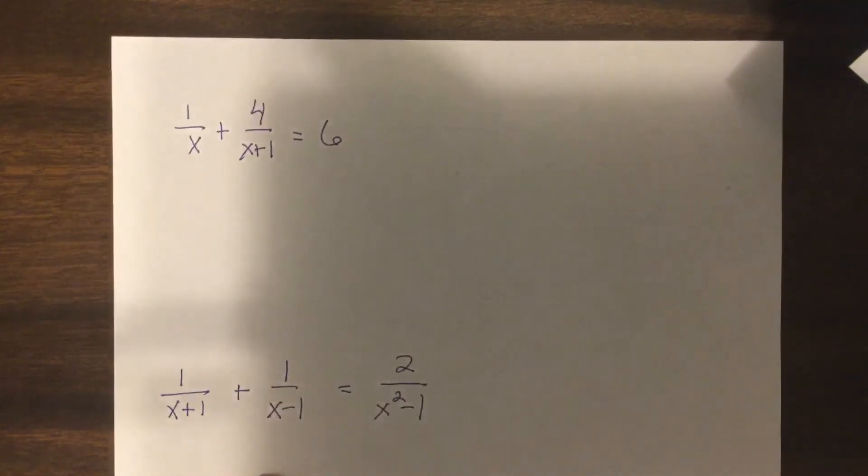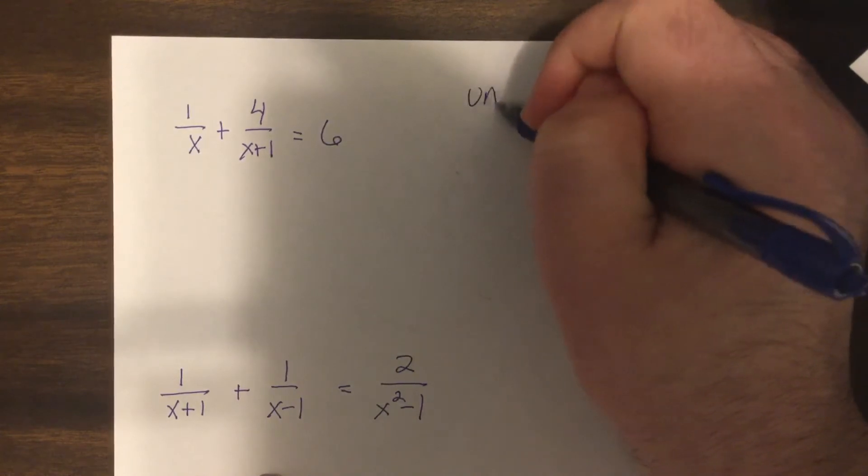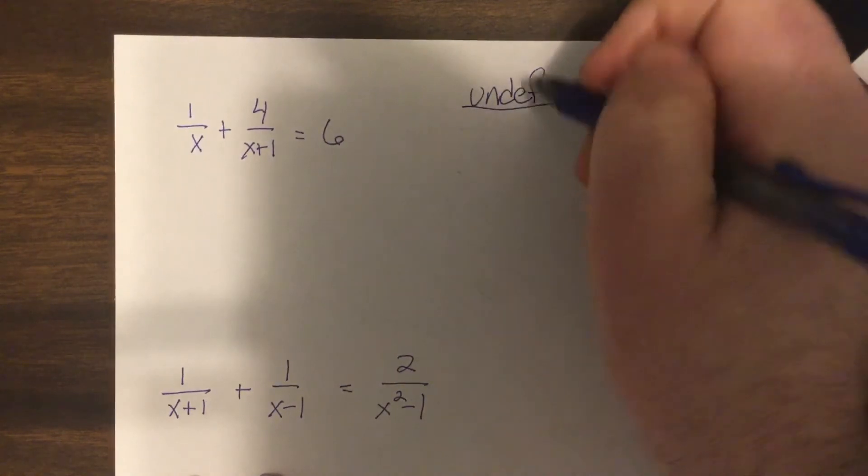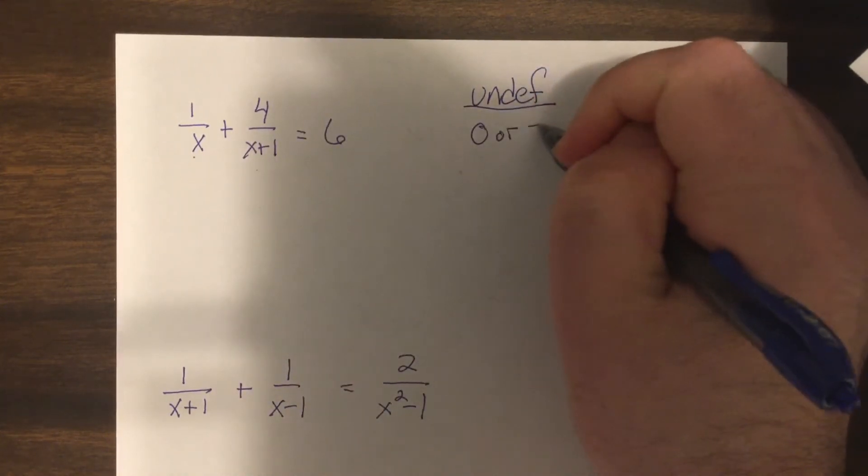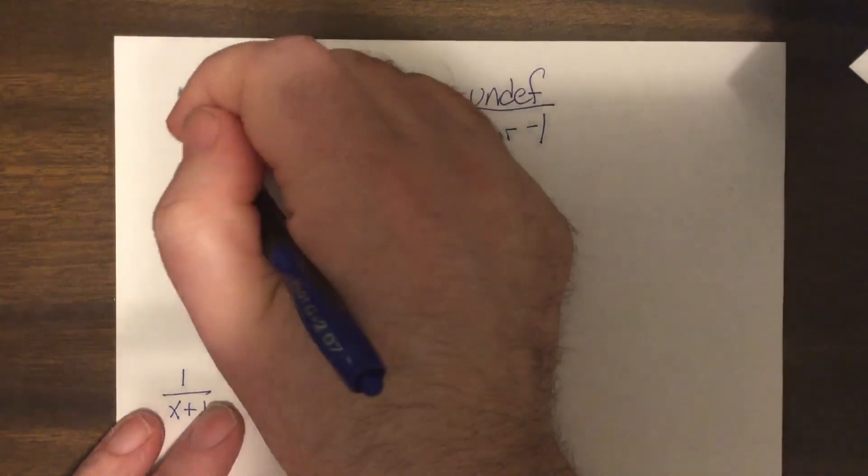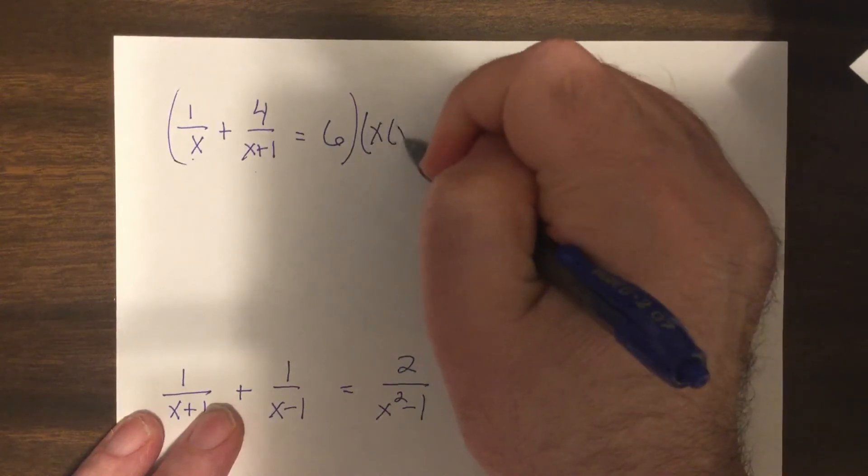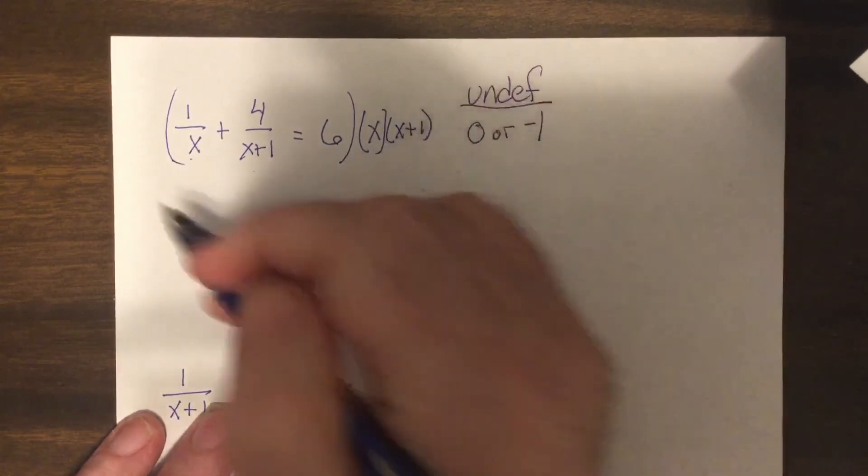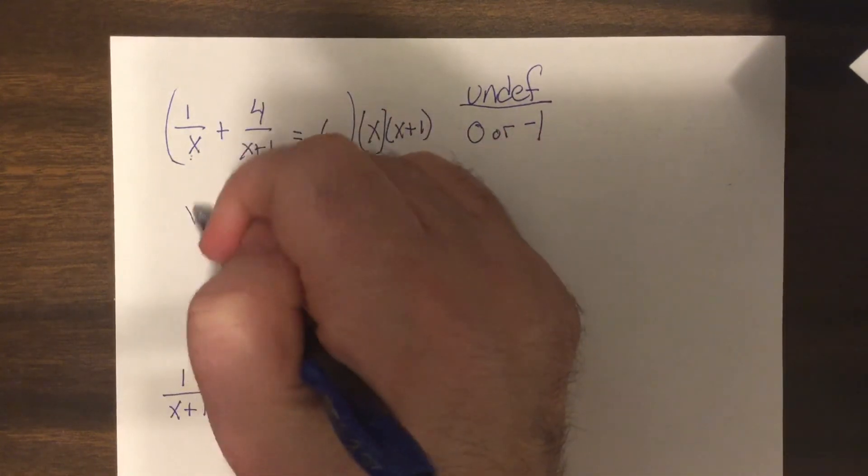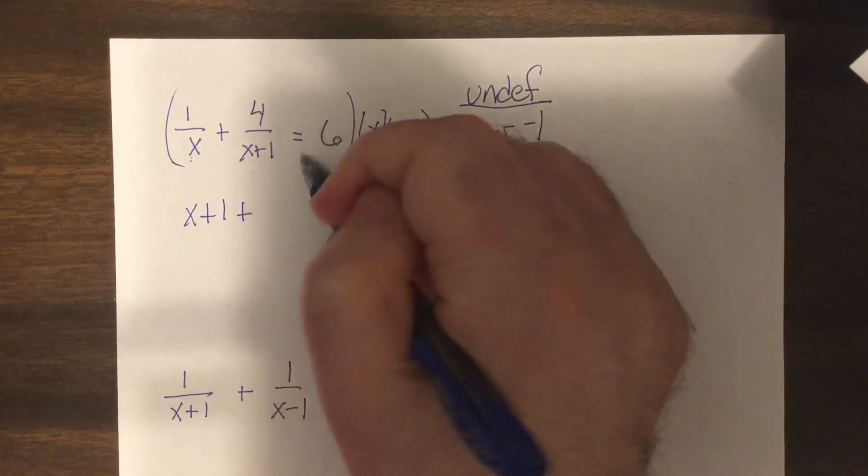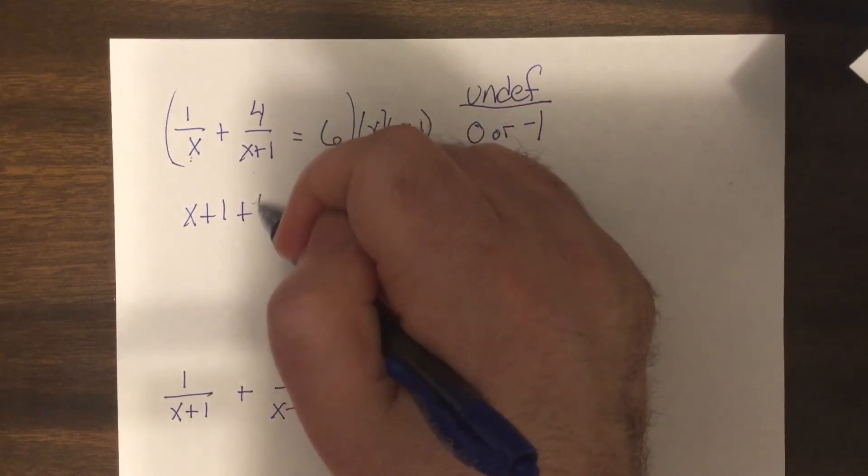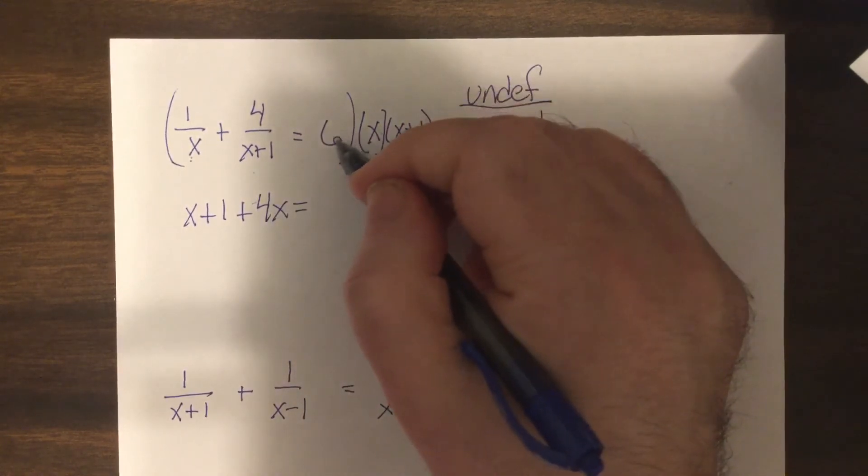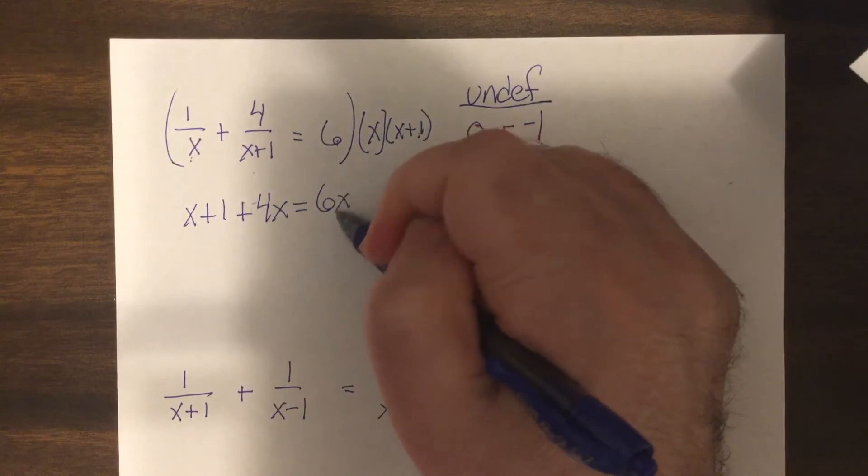So we have done this before. Let's look at this one. The undefined would be 0 or negative 1. So I'm going to multiply everything by x(x+1). So the x cancels, you'd have 1 times (x+1). The (x+1)'s cancel so it'd be x times 4. And this you just have to distribute everything, so it'd be 6x² plus 6x.